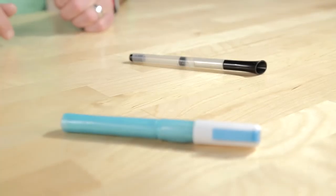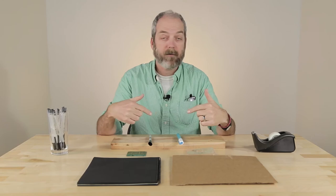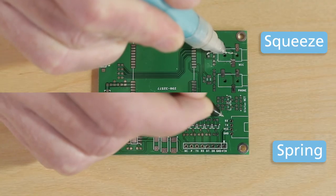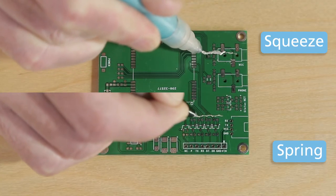Today we are going to try these two different pens on a variety of different materials. This is our first material we're going to try, which is a PCB board.